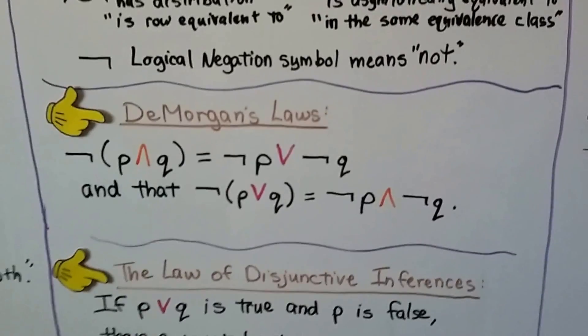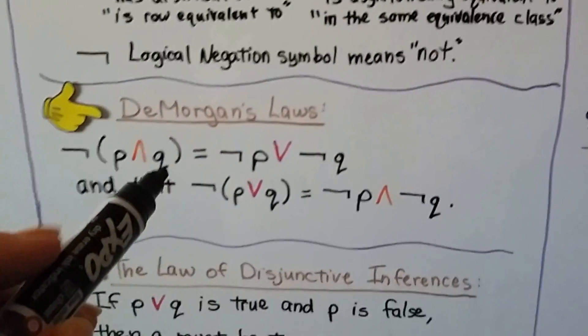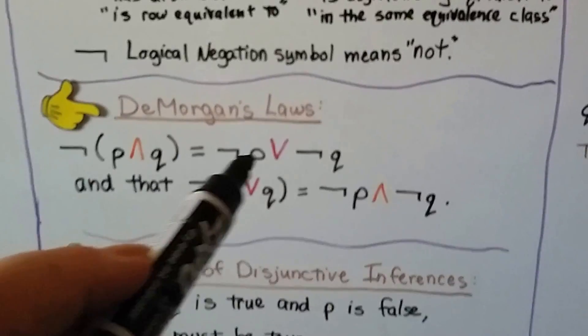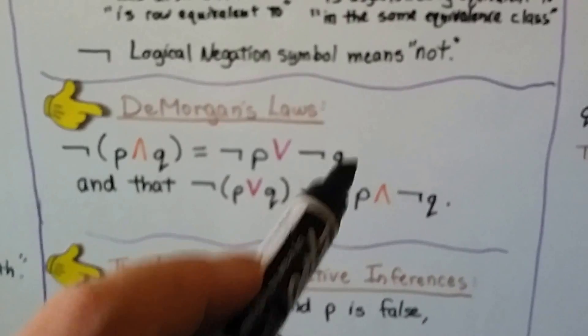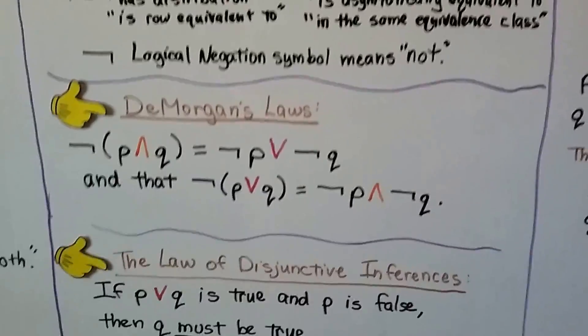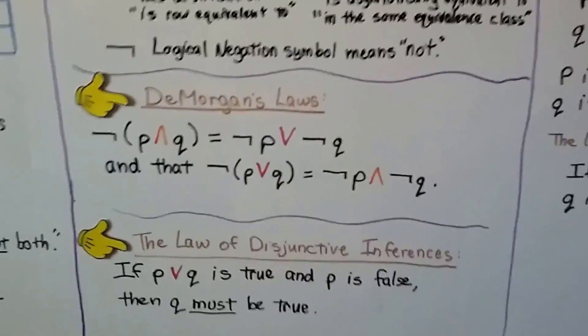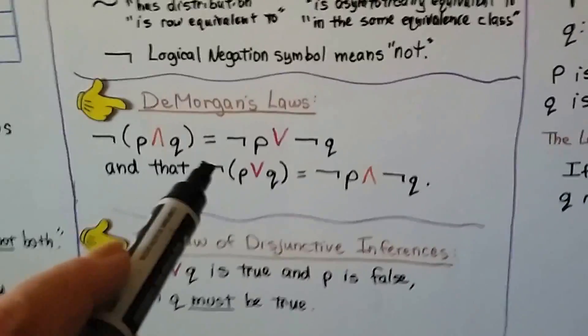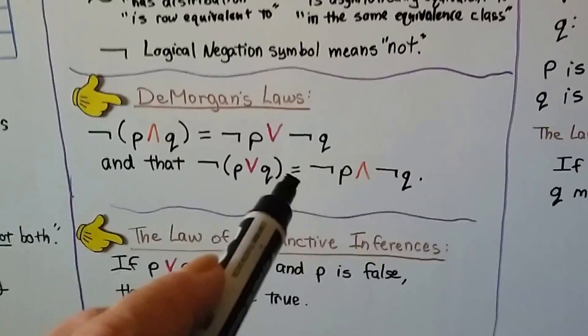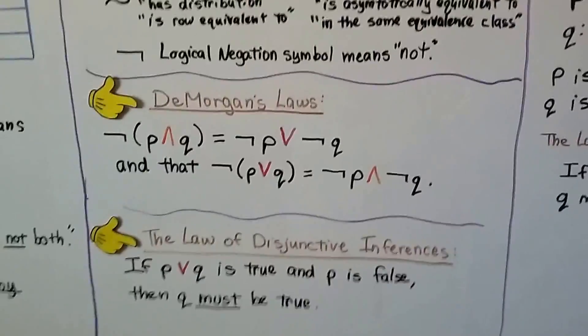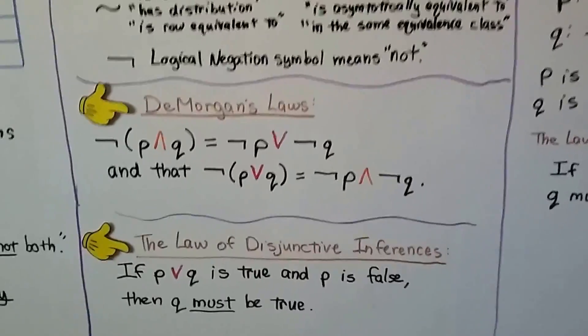Here's De Morgan's Law. NOT P AND Q is equal to NOT P OR NOT Q. I know this is confusing. I've got some sentences to back this up in a second. And NOT P OR Q is equal to NOT P AND NOT Q. So that's De Morgan's Law.